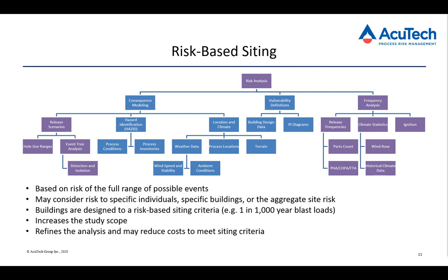Buildings can then be designed to a risk-based siting criteria. Just as a structural engineer designing a skyscraper might design for a one-in-500-year wind load, we may design for a one-in-1,000-year or one-in-one-million-year blast load, depending on the risk criteria being applied. It does increase the study scope, which means the study will be more costly and take longer. But refining that analysis can often reduce the costs to meet the siting criteria, which sometimes can be very high, especially for sites with a small footprint.